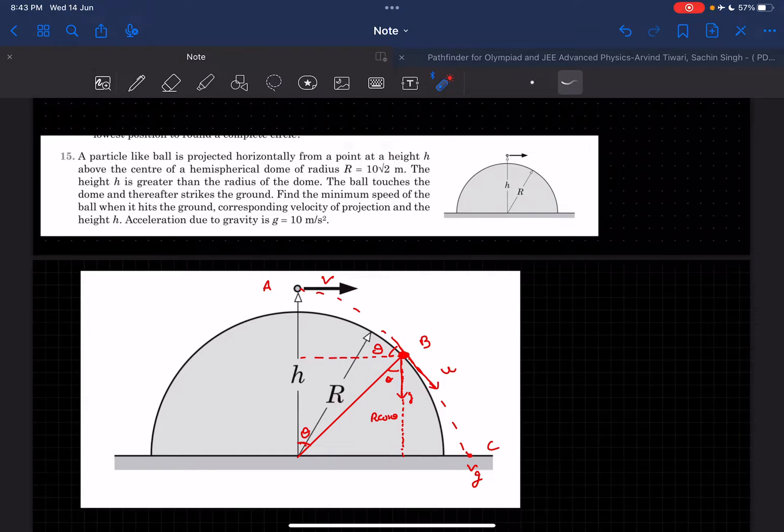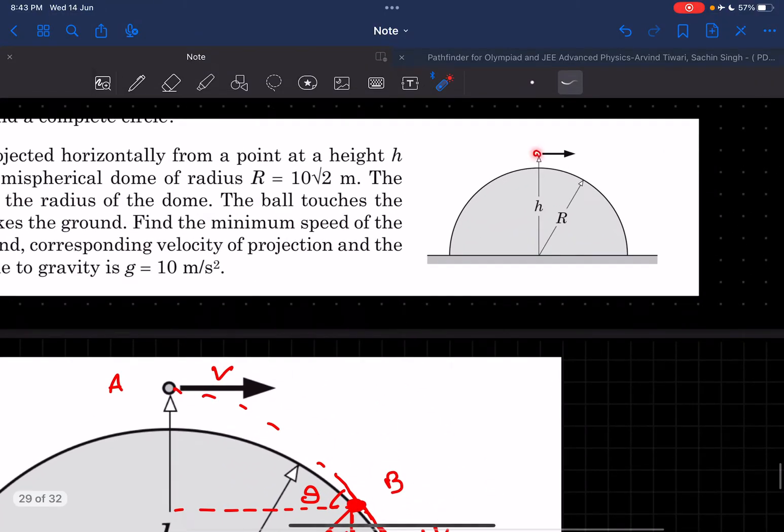Hello everyone, in today's video we're going to solve this problem from Pathfinder Work Energy Power. In this problem, a ball is projected horizontally from a height h, where h is greater than the radius of the dome. The ball touches the hemispherical dome on its journey and then falls to the ground.